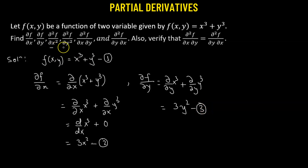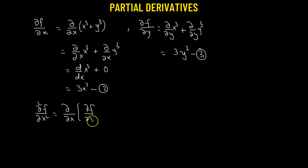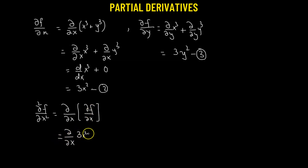Our next task is to find the second partial derivative of f with respect to x. This can be expressed as the partial with respect to x of the partial of f with respect to x. We already obtained partial of f with respect to x, which is 3x². So we take the derivative of 3x² with respect to x. Since there is only x dependence, this equals 6x. Let's label this as number 4.